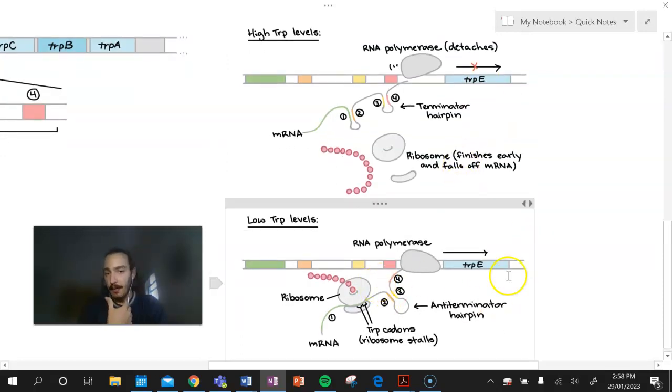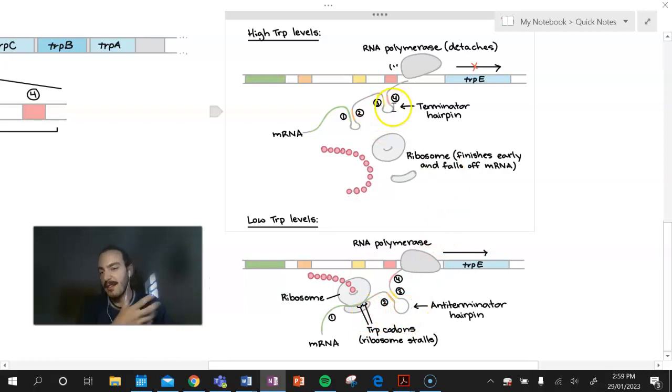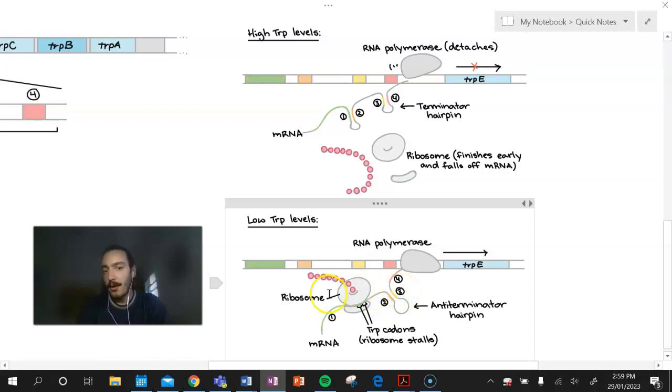That's very different from the low TRP environment. So now what we can see is that a different loop is forming. So we can see you don't need to know the numbers, but you can see that here it's three and four that are forming this loop. Here, it's two and three that are forming the loop. So the difference is that in this environment, this ribosome is having to wait a lot longer because you're waiting a long time to get this TRP.